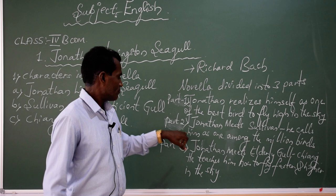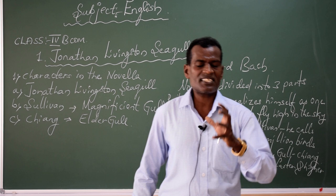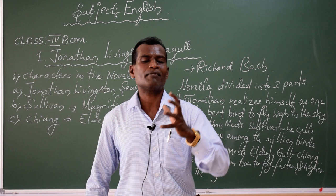The third part of the novella introduces how Jonathan Livingstone Seagull is going to teach Chiang, an elderly bird, how to fly faster and higher in the sky.